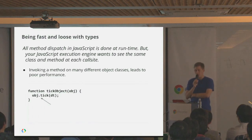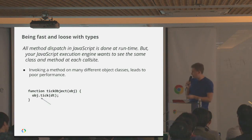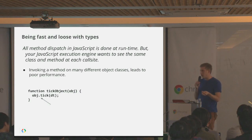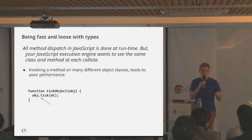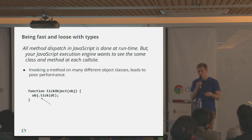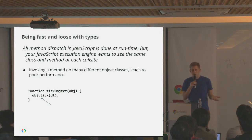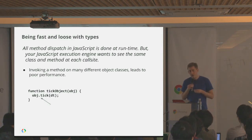Similarly, all method dispatch in JavaScript is done at runtime, but your JavaScript engine wants you to be as strict as possible for maximum performance. In a function like tick that takes an object argument and calls obj.tick(), since JavaScript is duck-typed, this is safe as long as obj can respond to tick. But if many different types of objects are seen at that call site, the JavaScript engine will say: at first it was one type, then a few types — that's okay — but after four or five types it gives up, because the gains from optimizing are thrown away every time it de-optimizes.